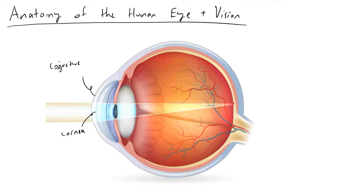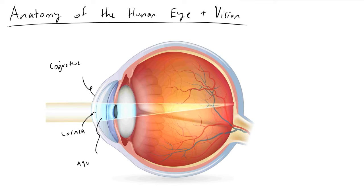As we pass through the cornea, the next thing we're going to pass through is called the aqueous humor. As we pass through the aqueous humor, the next thing that's going to happen in order for a photon to actually make it deeper within our eye is it's going to have to pass through something called the pupil. And the pupil is this little opening here.